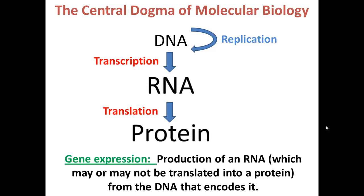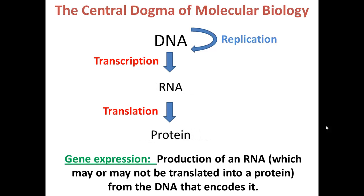Gene expression can be high — increased gene expression leads to production of more RNA and potentially more protein. Or decreases in gene expression lead to production of smaller amounts of RNA and protein. The focus of this chapter is going to be how we regulate gene expression: how do we turn it up and increase the amount of RNA or protein we produce, and how do we turn it down?